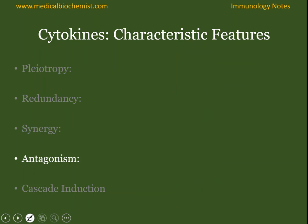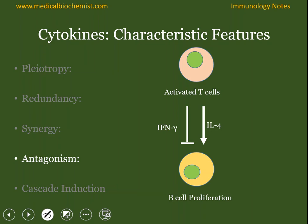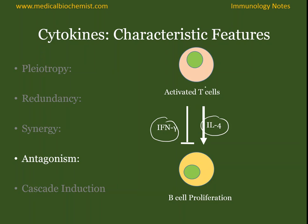Antagonism occurs when two cytokines act in an opposite manner. For example, there are two cytokines — interferon gamma and IL-4 — both secreted by T cells. When T cells secrete interferon gamma, that leads to the inhibition of B cell proliferation. In contrast, when IL-4 is secreted by T cells, it promotes B cell proliferation. So the balance between interferon gamma and IL-4 regulates B cell proliferation.